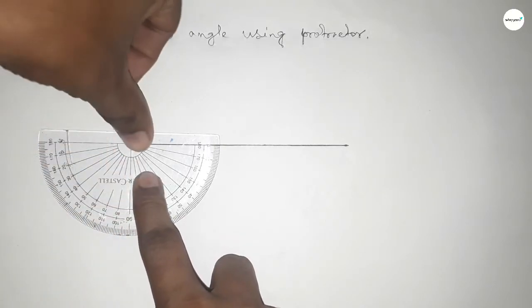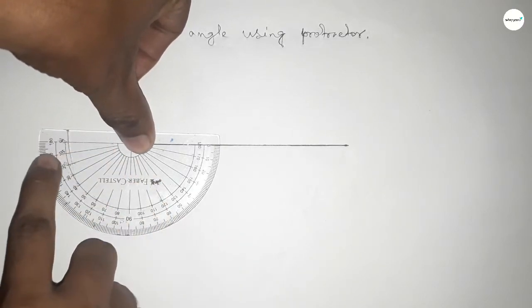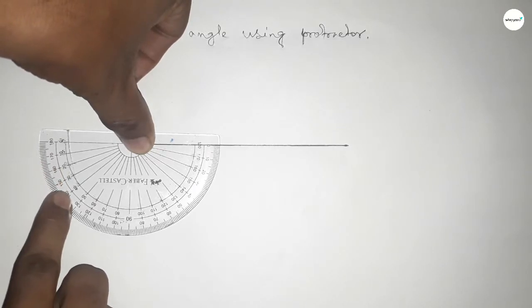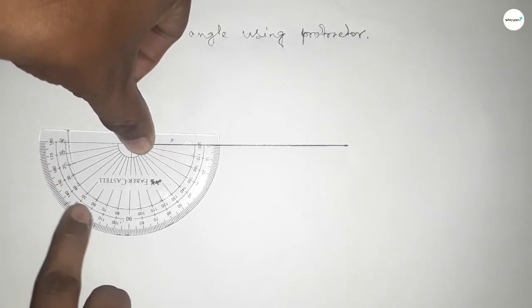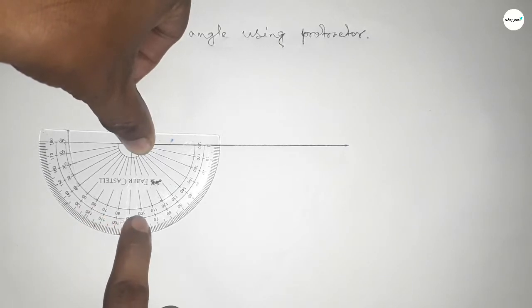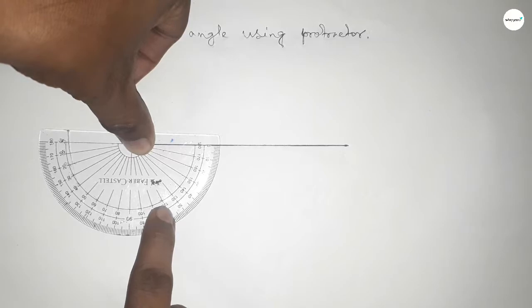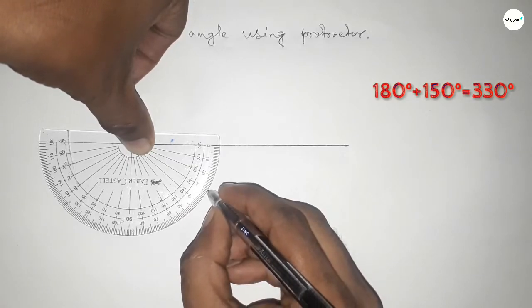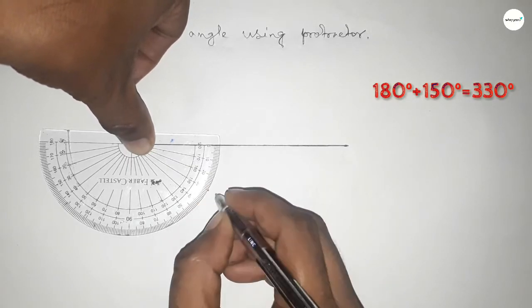But we have to draw 330 degree angle, so if you add 10, 20, 30, 40, 50, 60, 70, 80, 90, 100, 110, 120, 130, 140, and 150. So if you add 150 degree angle with 180 degree, then we can get 330 degree angle.